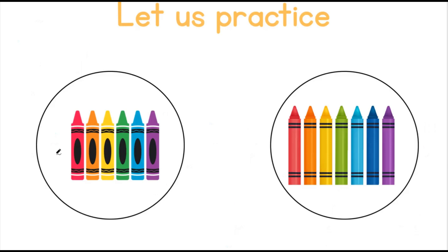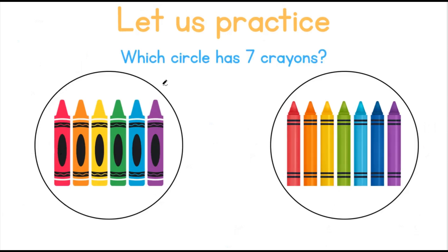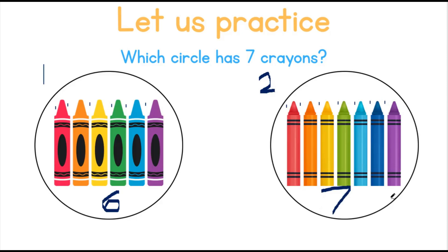Let us practice. Here we have 2 circles with crayons in them. Let's count how many crayons are there in each circle. Which circle has 7 crayons? Circle number 1: 1, 2, 3, 4, 5, 6. Circle number 1 has 6 crayons. Circle number 2: 1, 2, 3, 4, 5, 6, 7. That means our answer is circle number 2. Circle number 2 has 7 crayons.